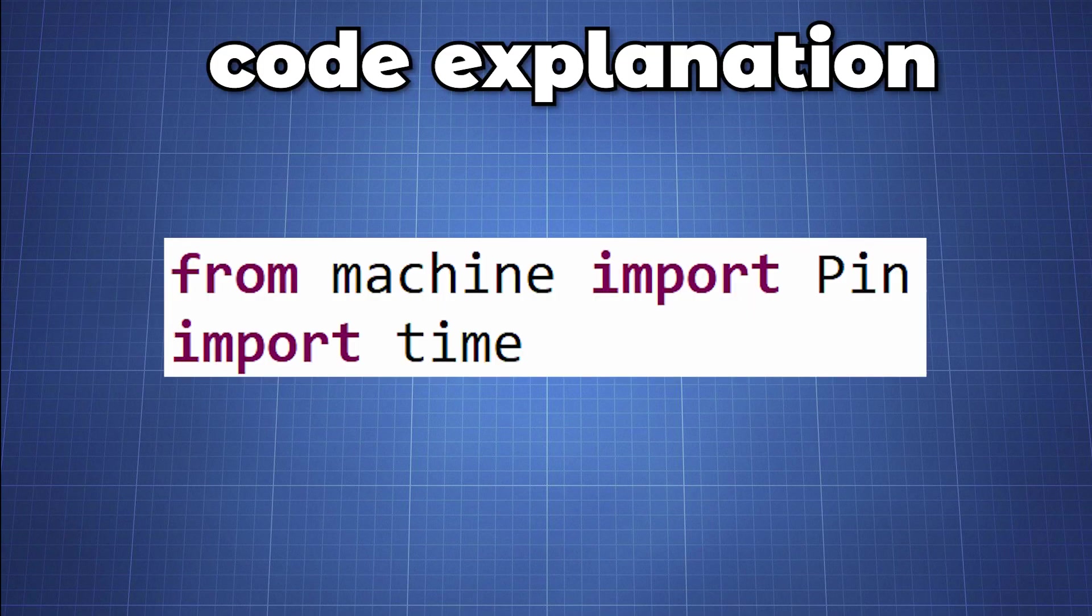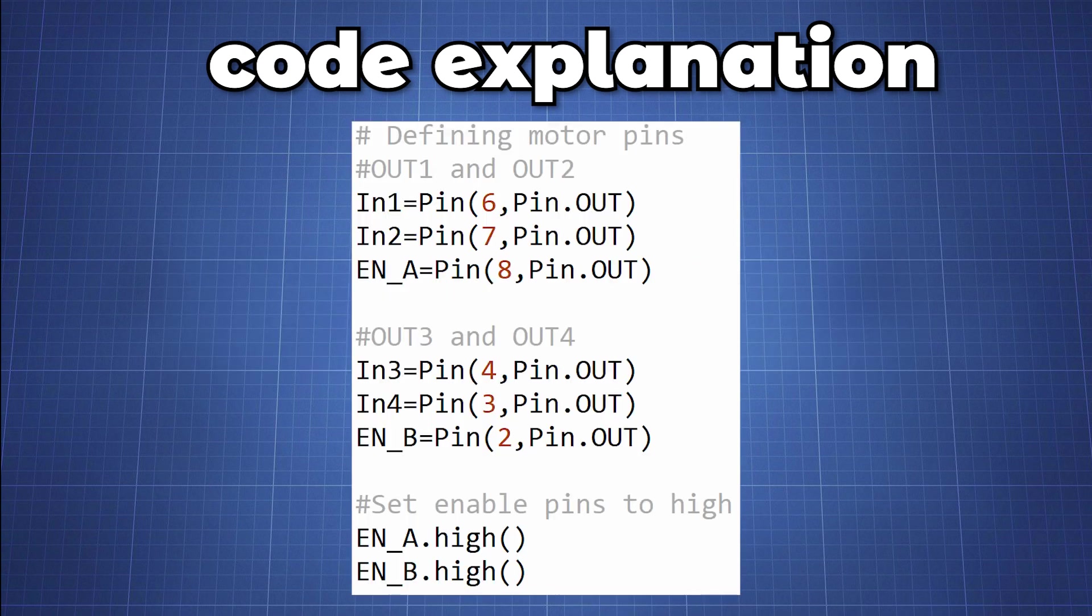Let's look at the code together. We start by importing the Pin module from the machine library and import the time module for creating delays. We define all the input pins and enable pins as output according to our schematic. Since we will not be using PWM to control the speed we can set the enable pin A and B to high.